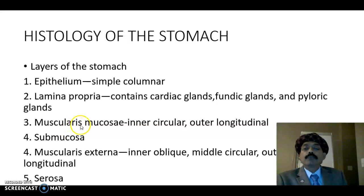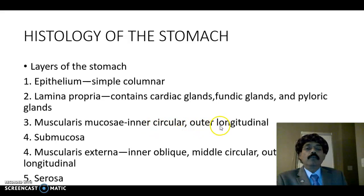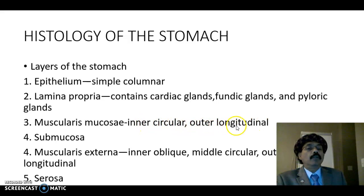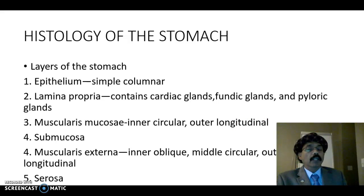The muscularis mucosa is smooth muscle. It has an inner circular layer and an outer longitudinal layer. In some places there is also an additional outer circular layer, but that is not always constant. The inner circular and outer longitudinal layers are the two constant layers; we may also find an inconstant outer circular layer in the muscularis mucosa.